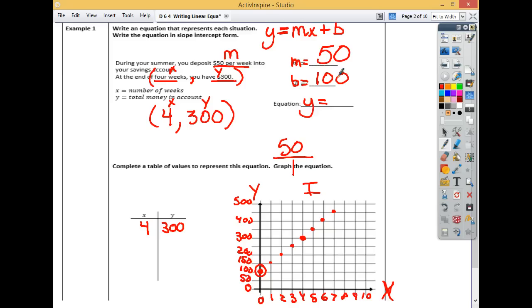So when you opened up your savings account, well, let's finish our equation here first. So now I have my m and my b. y equals 50, because that's my m. My b is 100. 50x plus 100. So what was my savings account when I opened? How much money did I have in my savings account when I opened it? You had $100 in your savings account when you opened it that summer. And then you made $50 a week.